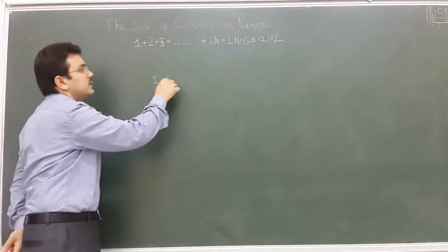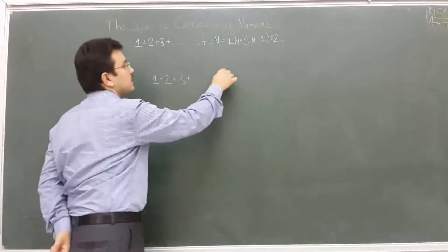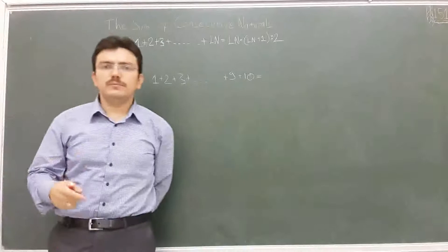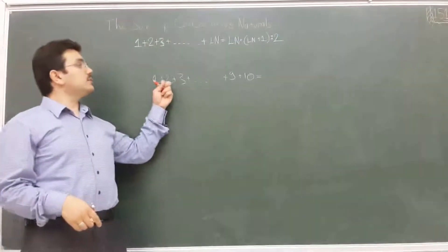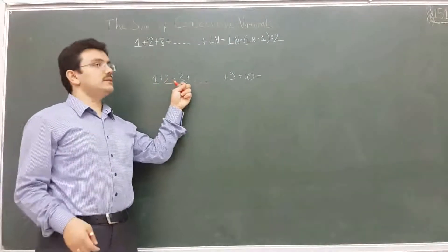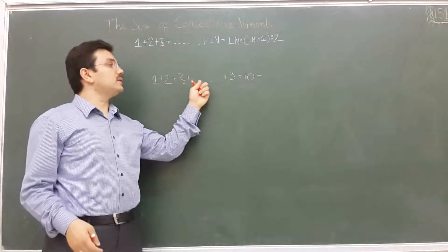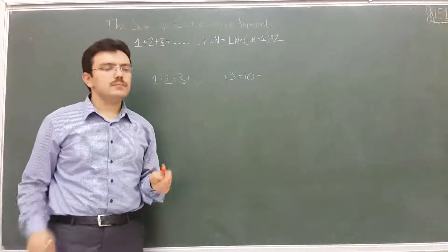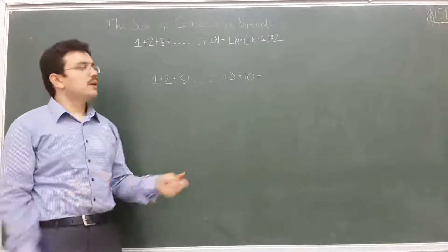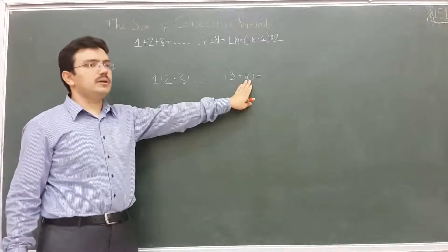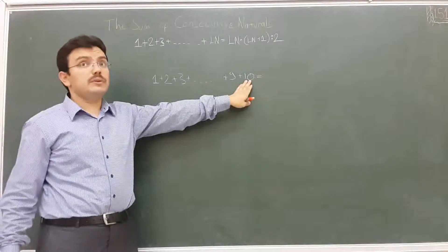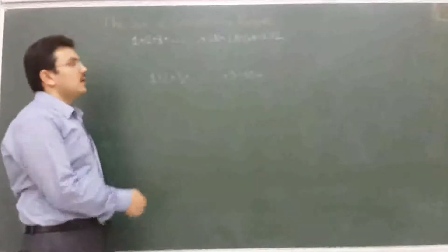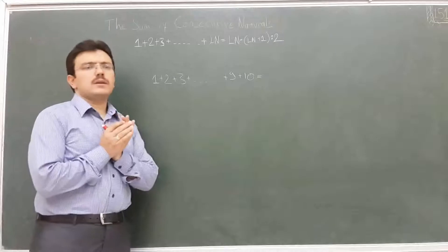To understand this formula, let's use the example of adding numbers from one to ten. You could solve it by adding them one by one: one plus two is three, plus three is six, plus four is ten, plus five is fifteen — and so on. Everybody found the answer that way, but it takes time. If I change ten to a bigger number like fifteen, it would take a lot of time.